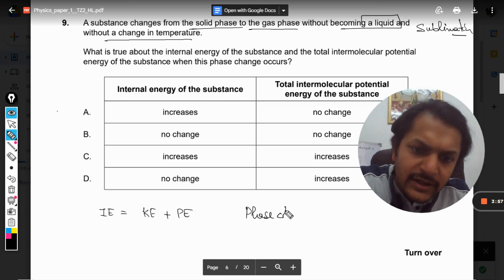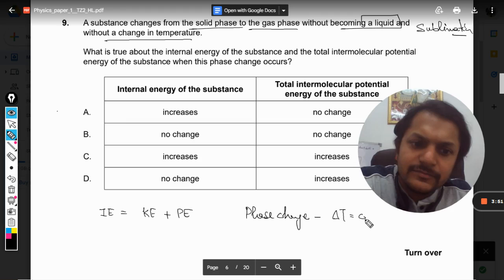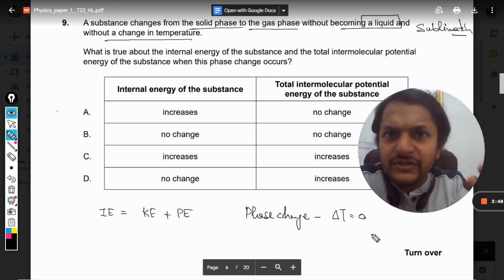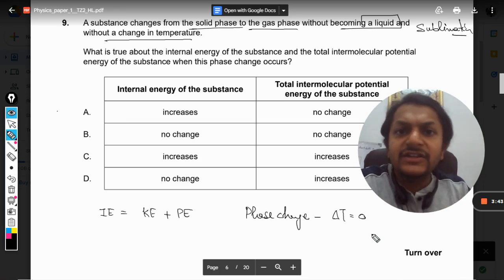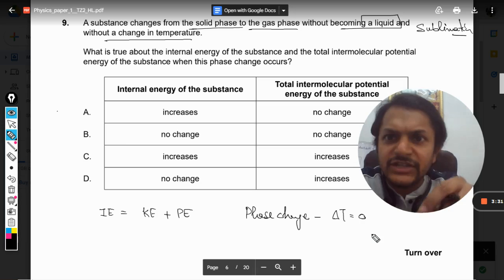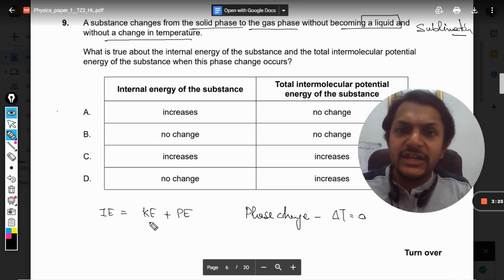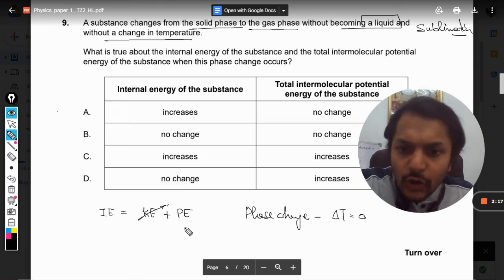When there is a phase change involved, there is no temperature change. Kinetic energy has a straightforward relationship with temperature - if temperature increases, kinetic energy will increase. But this concept is only for gases, not for phase change. Even then we can say there will be no change in kinetic energy. So only potential energy is considered here.